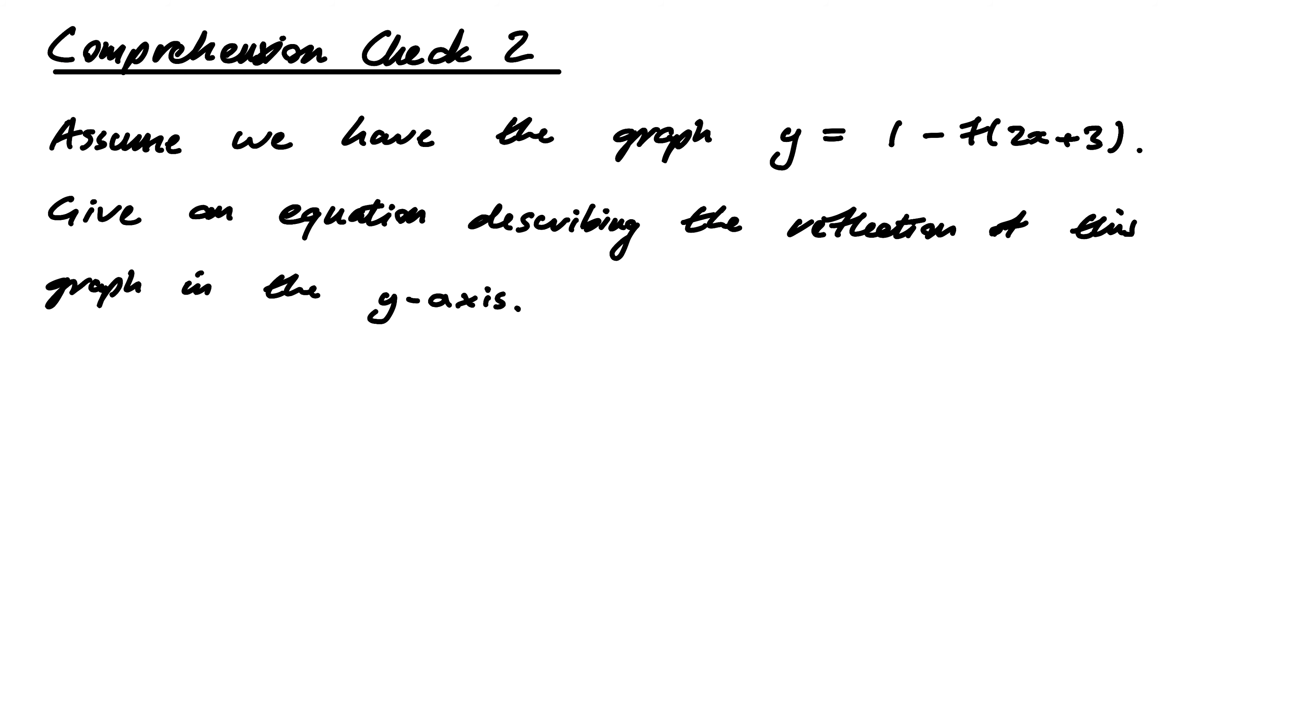Alright, so imagine we have now not the graph of f(x), but the graph of something quite complicated: y = 1 - f(2x - 3).